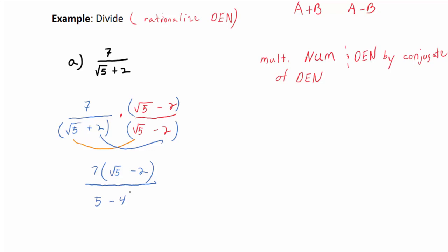But again, you don't have to think in those terms. You can just think in terms of the f and the l from the FOIL method. Anyway, what's five minus four? One. So we get seven times root five minus two over one. Are we going to write it that way though? No, we'll just write it as seven times root five minus two.